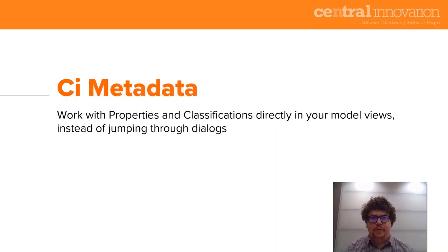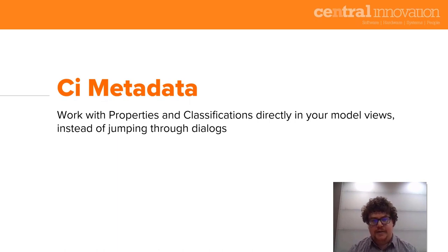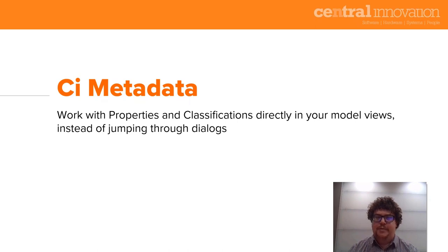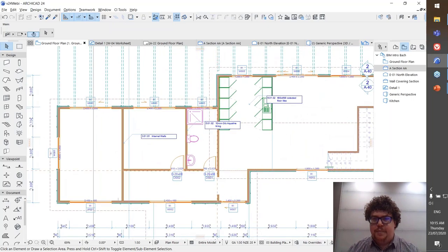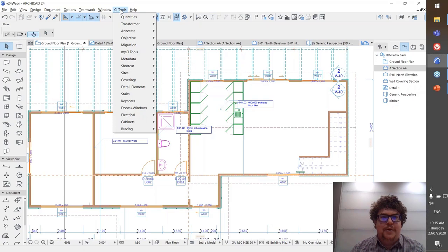The last of the four new tools is CI Metadata. Hopefully many of you deal with metadata fairly frequently — properties and classifications in ARCHICAD contain a lot of metadata, and managing it properly is important especially when exporting to IFC. Currently managing metadata can be time-consuming, requiring you to select elements and navigate settings dialogues, and comparing between elements is difficult. The CI Metadata tool takes the form of a palette: go to CI Tools menu, then Metadata, and choose Show Metadata Palette.